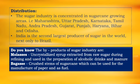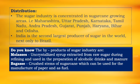Distribution of sugar industry. The sugar industry is concentrated in sugarcane growing areas such as Maharashtra, Uttar Pradesh, Karnataka, Tamil Nadu, Andhra Pradesh, Gujarat, Punjab, Haryana, Bihar, and Odisha. India is the second largest producer of sugar in the world, next only to Brazil. Brazil is the largest producer of sugar in the world, and India ranks second.